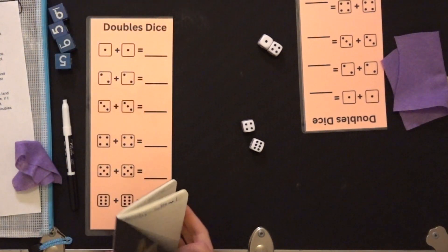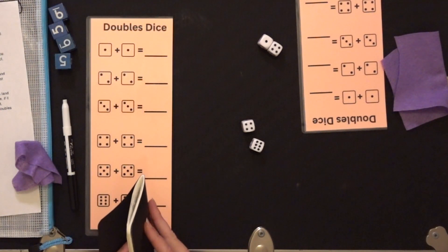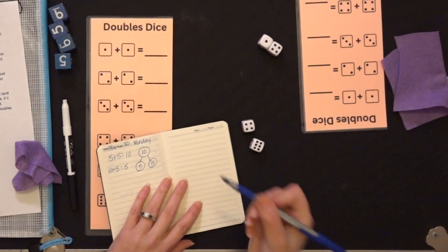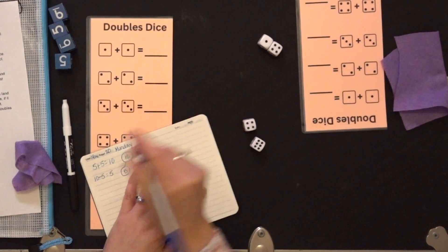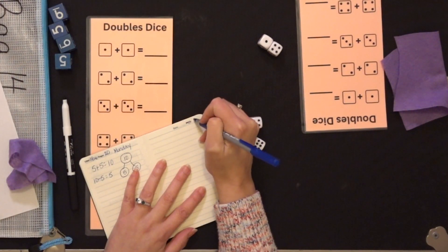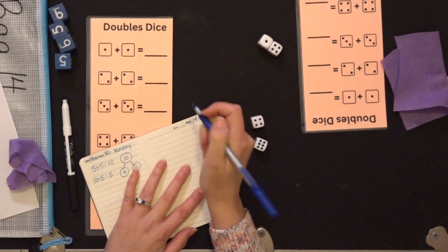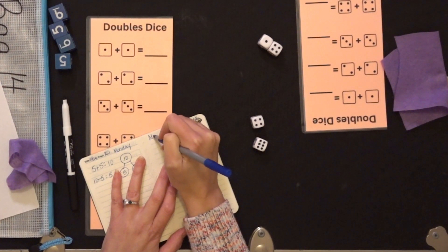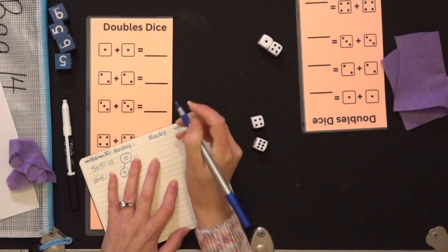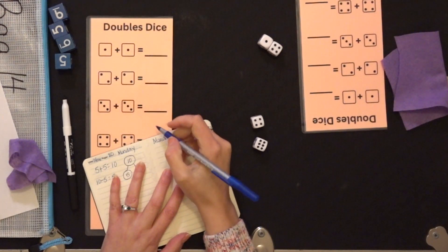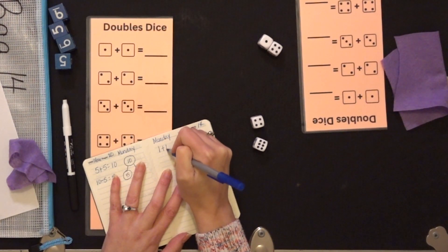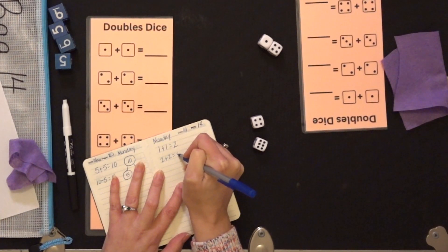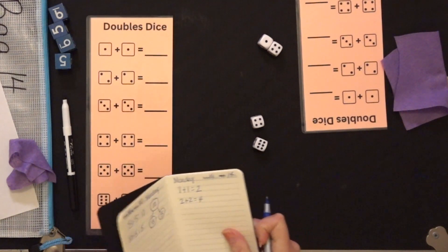Now you need to record in your homework journal. So you're going to go to the next available page where it says page. We're going to cross that off. We're going to put our bag number. This is bag 14. And we're going to put the date. And we're going to write Monday. And then we are going to record all of our equations. So one plus one equals two. Two plus two equals four. And we're going to go through and we're going to record them all.